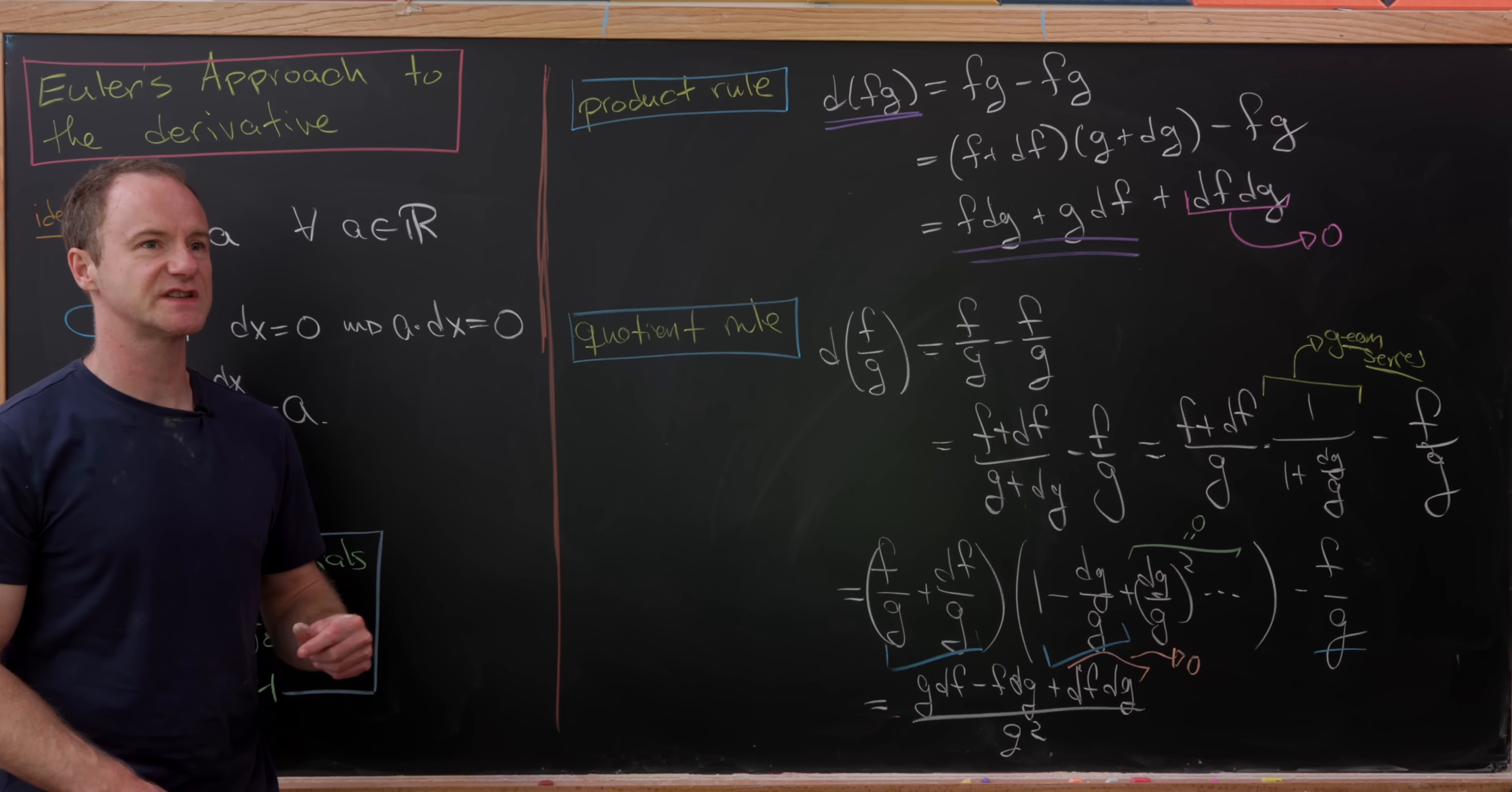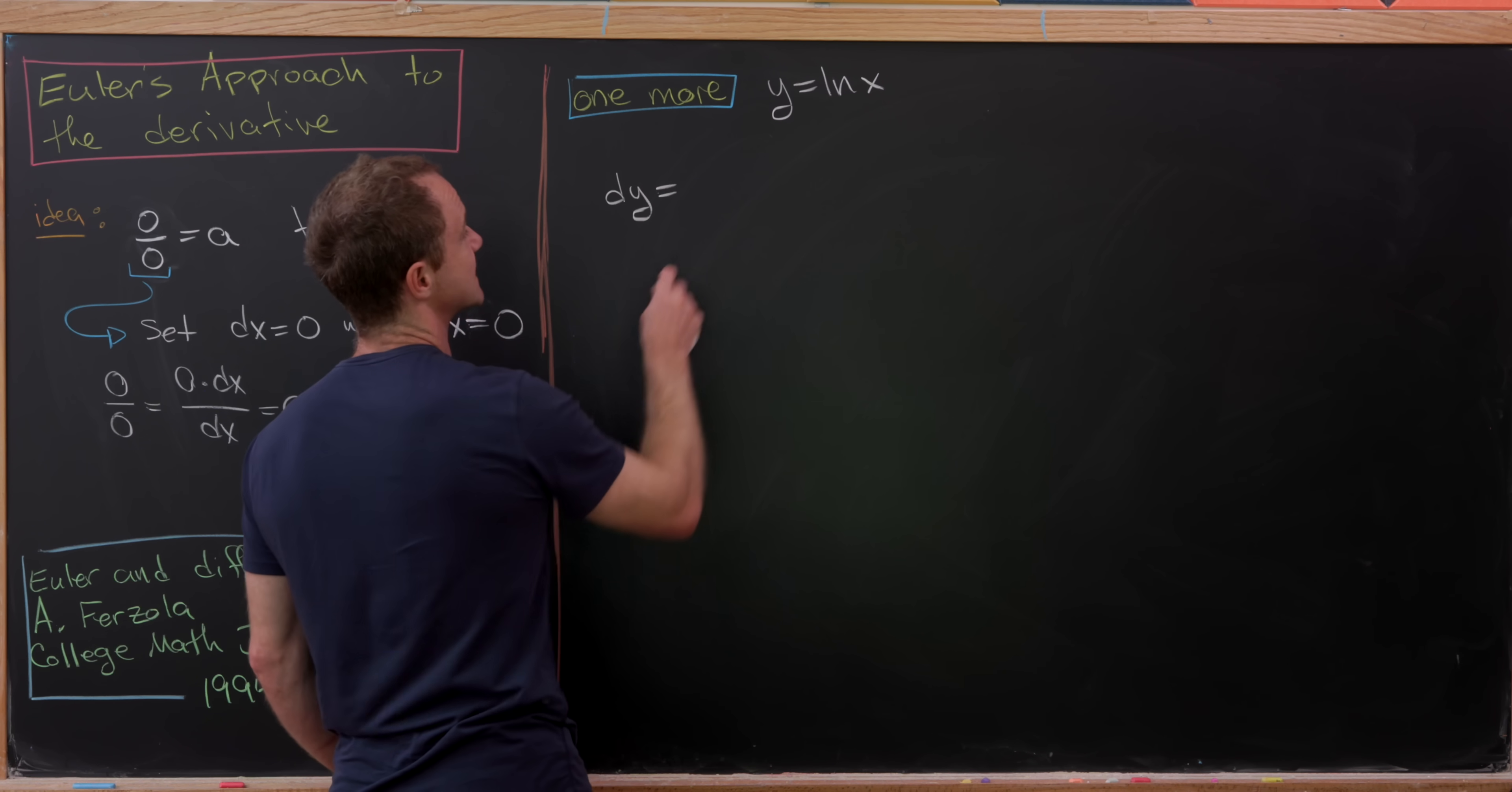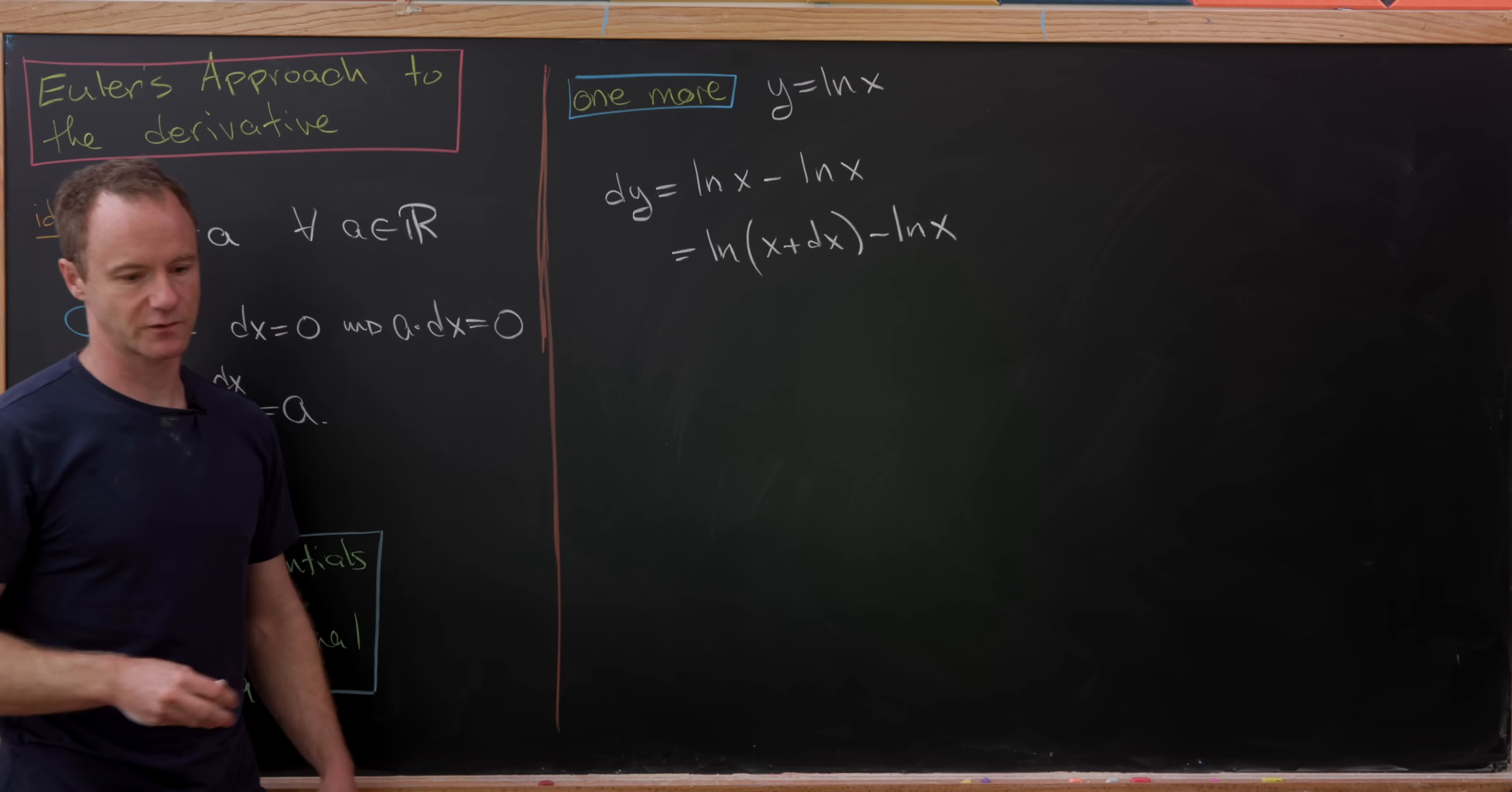So now let's finish this off by seeing if we can reproduce the derivative of a transcendental function. The transcendental function that we'll work with is the natural log function. So I've set Y equal to the natural log of X. And now let's write DY as, well, it's equal to zero, but it's also equal to natural log of X minus natural log of X, which can be written as natural log of X plus DX minus natural log of X by adding a zero into that natural log in the form of DX, of course.